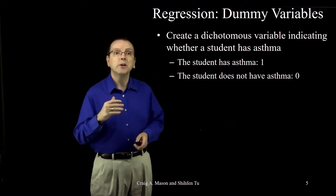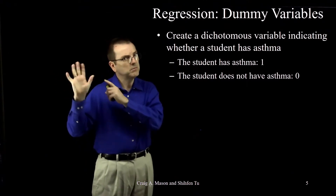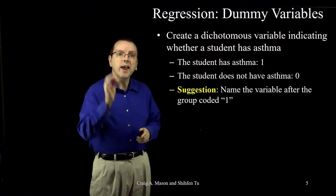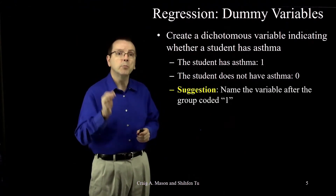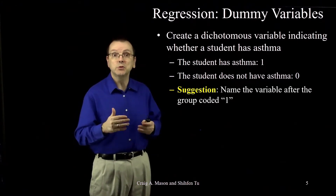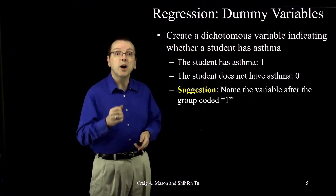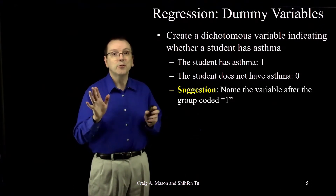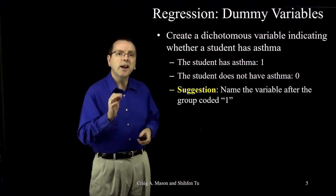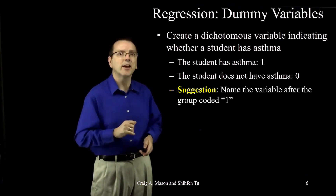You then make a variable containing that information. I'd suggest naming that variable after whichever group is coded one. So given I'm particularly interested in students with asthma and they're coded as ones, I'll make a new variable called 'asthma.' Of course you can call the variable anything you want, but naming it after the group coded one makes things easy and clear later on.